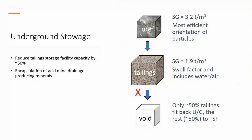A question always asked on site is: how much material can we put underground? Nobody likes storing tailings on surface — it's costly with potential environmental issues. By utilizing hydraulic fill or paste fill, you're able to put approximately 50% of your tailings back underground, give or take, depending on how efficient your operation is — potentially improving further by five to ten percent. An additional benefit of encapsulating material underground is that you fill voids that potentially have acid mine drainage producing minerals. If you encapsulate the tailings material with cement, you further immobilize leachable metals that could otherwise cause groundwater pollution.